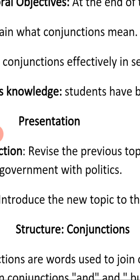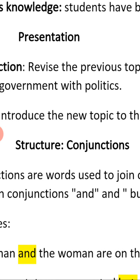In that previous lesson, the meaning of government was given, politics was also defined, as well as words like democracy, manifesto, the legislature, the executive, the judiciary, the electorate, the nominee, and so forth. All these were explained in detail. Now, moving to the topic of today — our topic is structure, where we'll be looking at conjunctions.